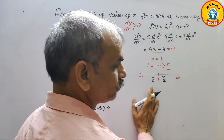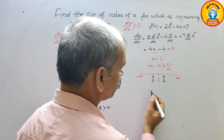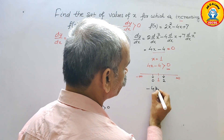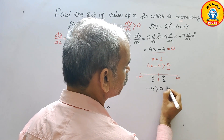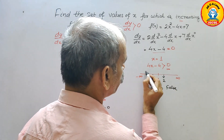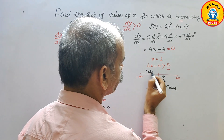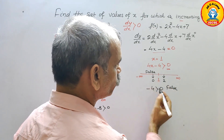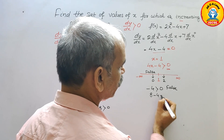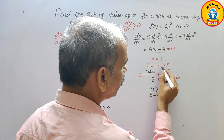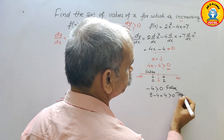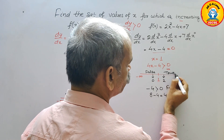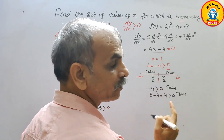Now back to the second function. Substituting x = 0 into 4x - 4: we get 4(0) - 4 = -4, which is not greater than 0, so false. Substituting x = 2: we get 4(2) - 4 = 8 - 4 = 4, and 4 > 0, so that is true. This side is true, so we can say x is greater than 1.